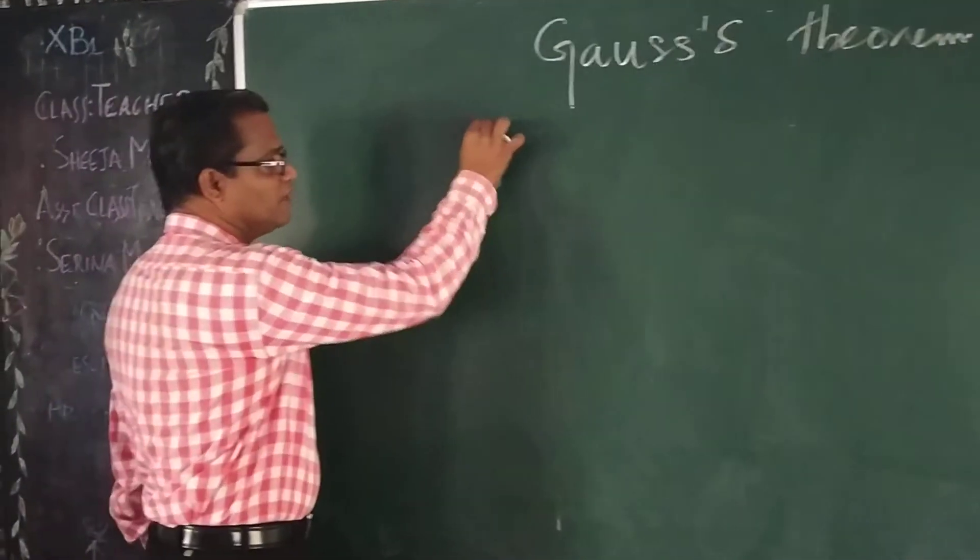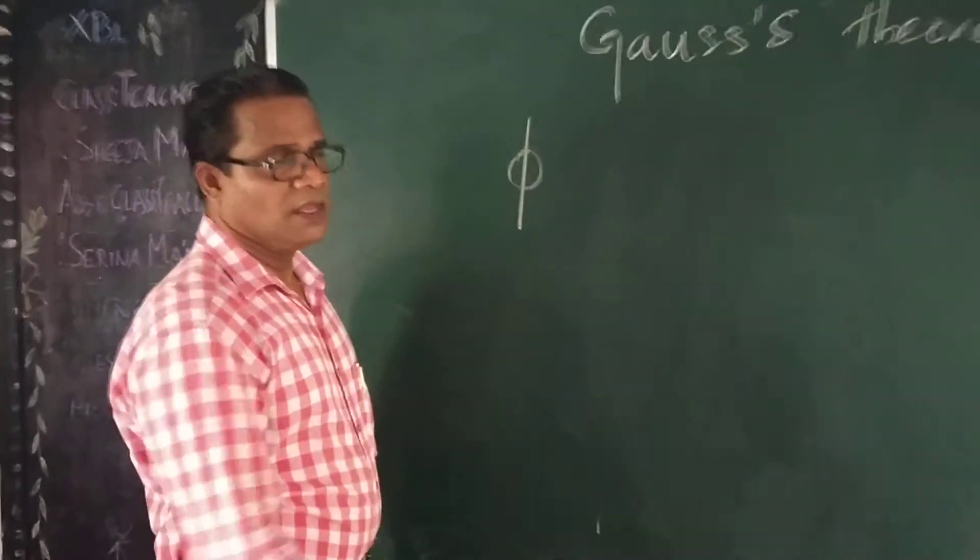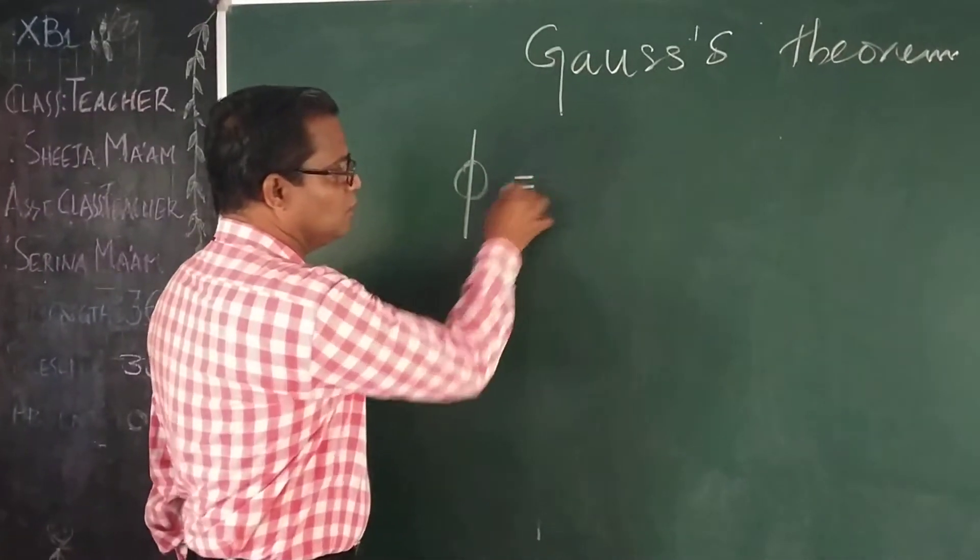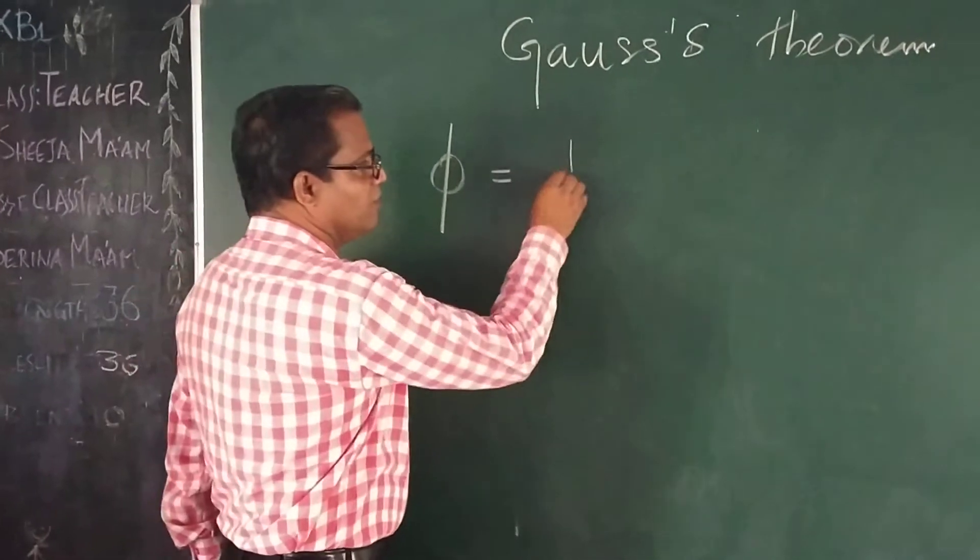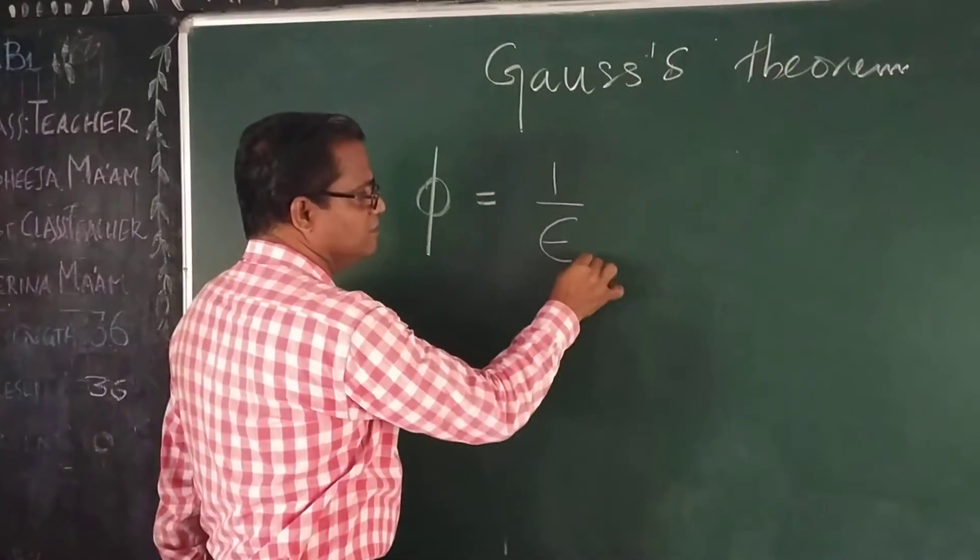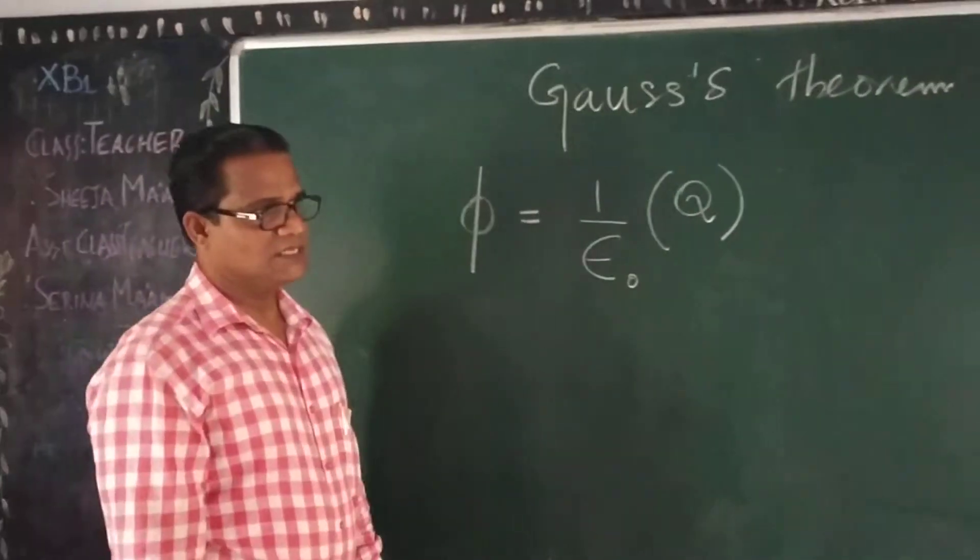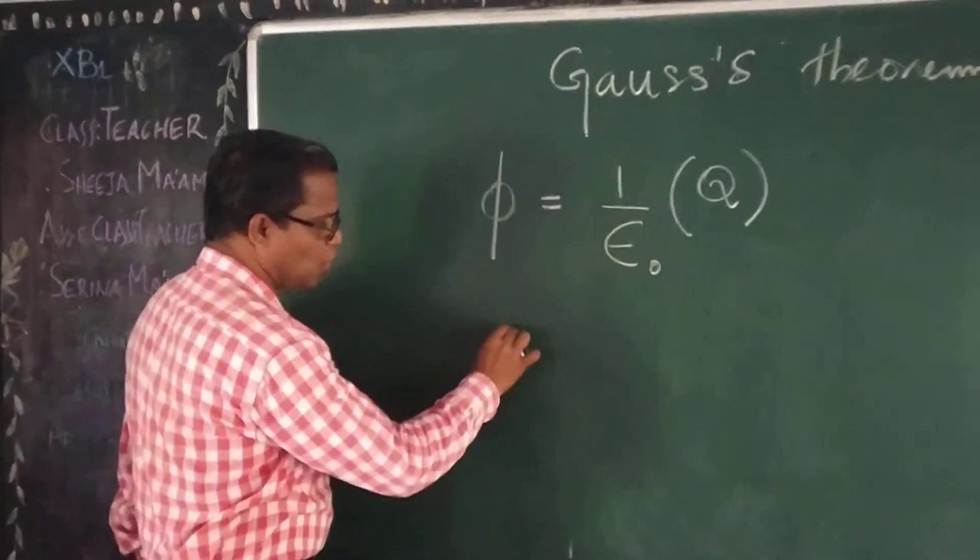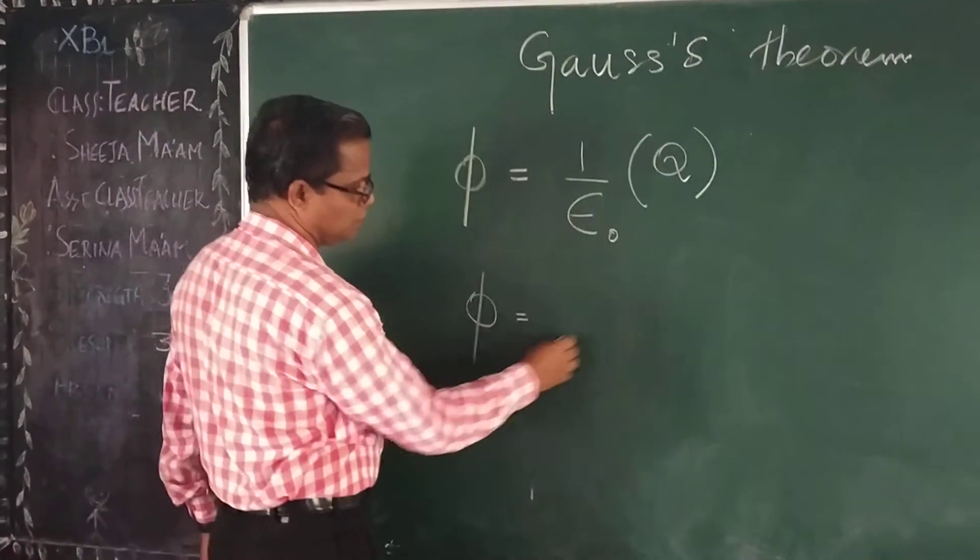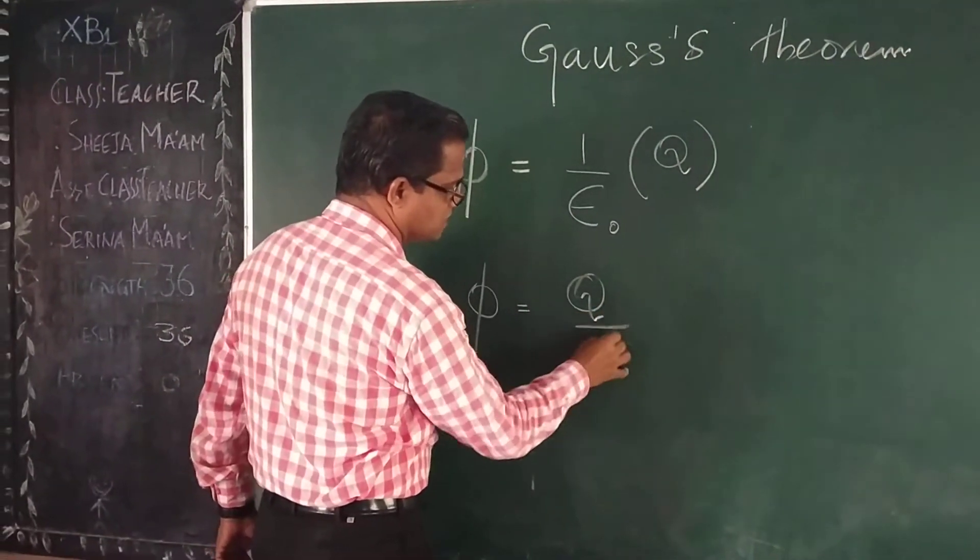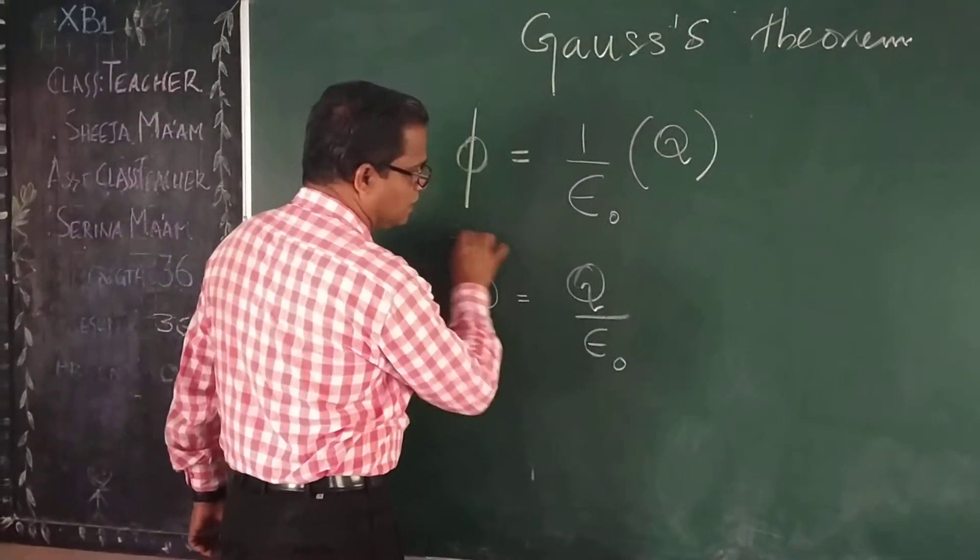If I assume flux as phi, that phi will be equal to 1 by epsilon 0 times the charge Q enclosed by the surface. In short, flux phi equal to Q by epsilon 0.